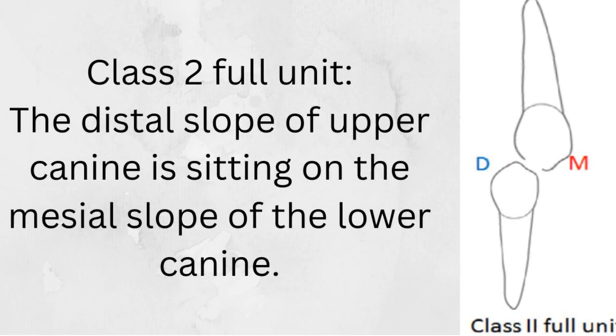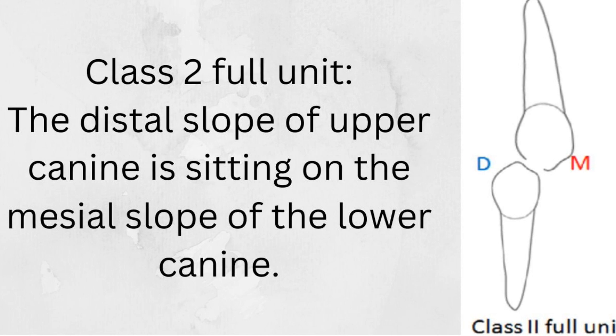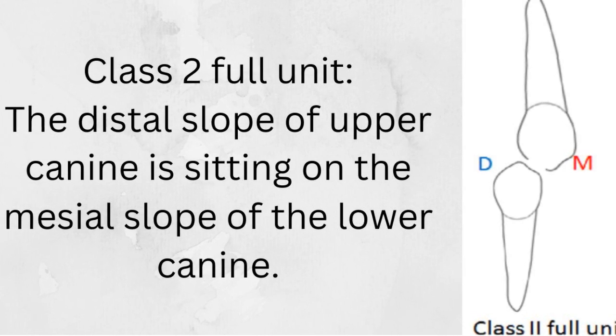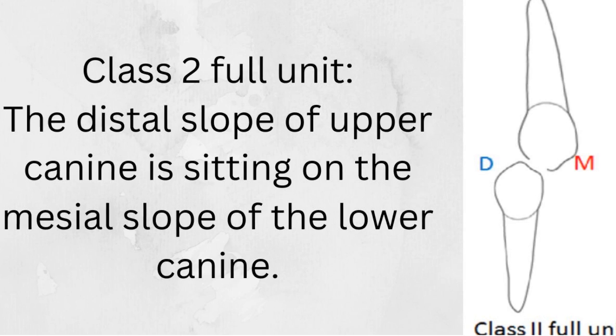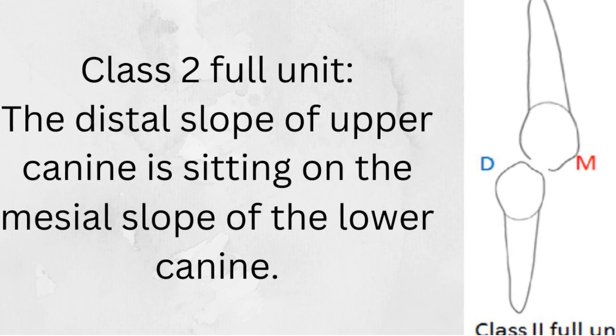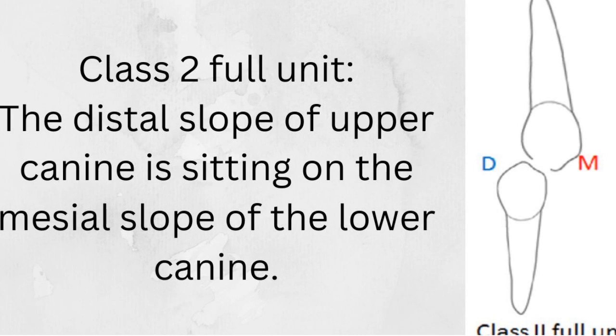In Class 2 full unit, the distal slope of the upper canine is sitting on the mesial slope of the lower canine. And it is called full unit because now the lower canine is more backward in comparison with the upper canine.